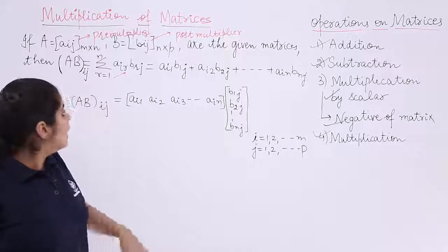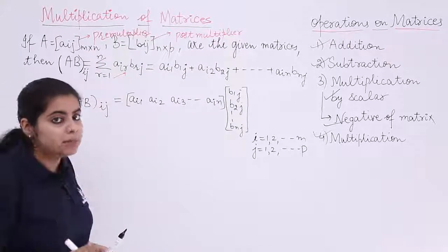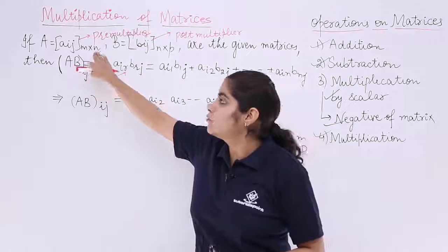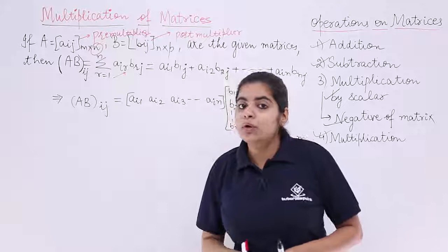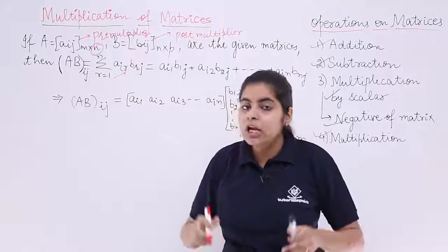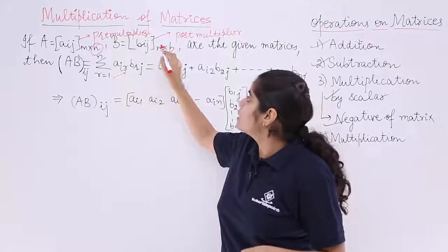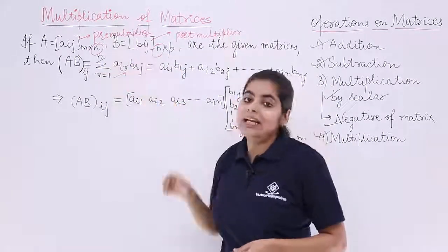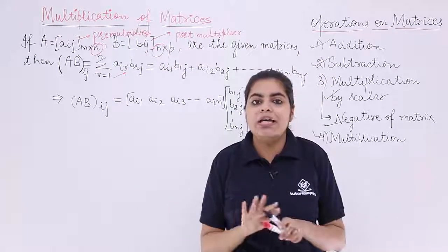Matrix multiplication is possible if and only if one condition satisfies. That means the number of columns, I repeat, the number of columns in the pre-multiplier, what is the pre-multiplier? The first thing. How many columns? Here it is N. The number of columns in the pre-multiplier should be same as the number of rows in post-multiplier. You see here, it is both N and N. Then only the multiplication is possible, otherwise it is not.